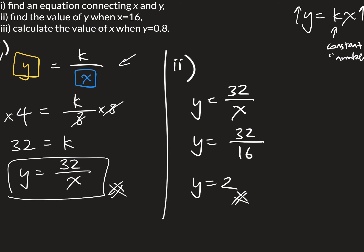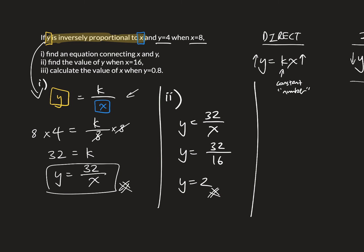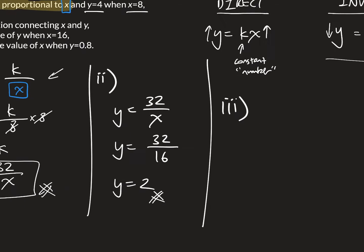And y naturally gives me 2. We're done. So when x is 16, y is 2. Finally, let's look at part triple i.